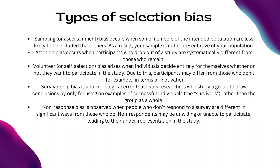Survivorship bias is a form of logical error that leads researchers to draw conclusions by only focusing on examples of successful individuals — the survivors — rather than the group as a whole. Non-response bias is observed when people who don't respond to a survey are different in significant ways from those who do. Non-respondents may be unwilling or unable to participate, leading to their under-representation in the study. Under-coverage bias occurs when some members of your population are not represented in the sample. It is common in convenience sampling, where you recruit a sample that's easy to obtain.